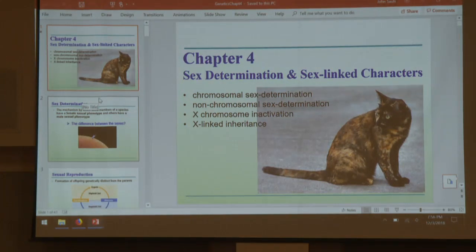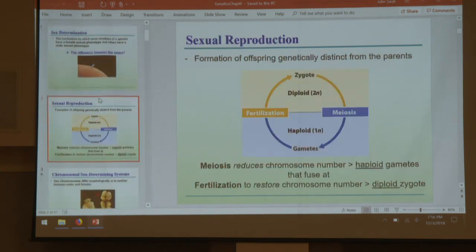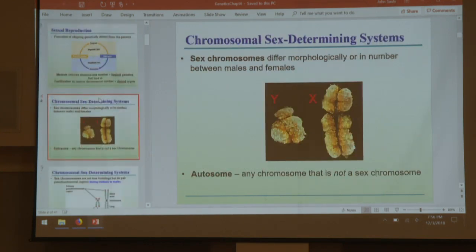Now we get into the fun stuff — probably a little more rusty until you started studying. We get into sex determination and sex-linked characters. We have two types of chromosomes: sex chromosomes — X and Y in humans, though there are other examples — and everything else, which we call autosomes.